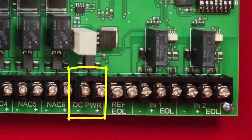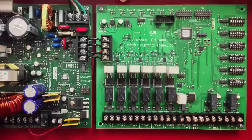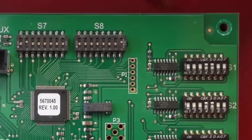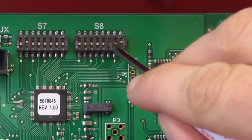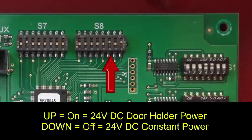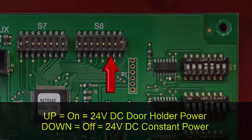The next set of terminals is the DC power aux power terminals. You have 3 amps of power that can be configured as continuous or door holder power. The DC power terminals are programmed through switch 8 found at the top of the board. On switch 8, set DIP switch 6 to the ON position for 24V door holder power or leave it in the OFF position for 24V constant power.